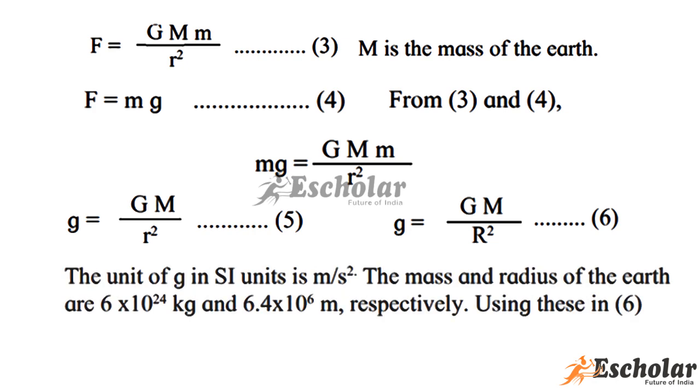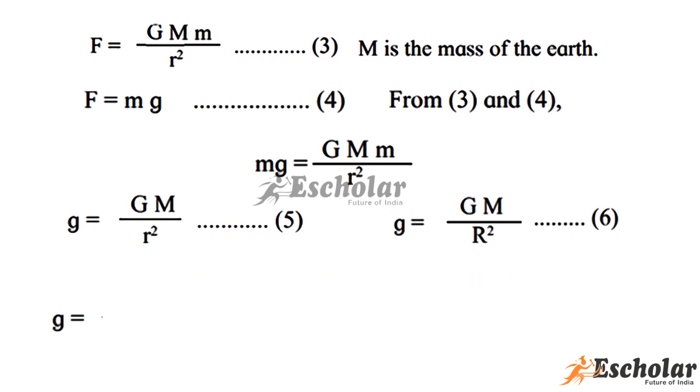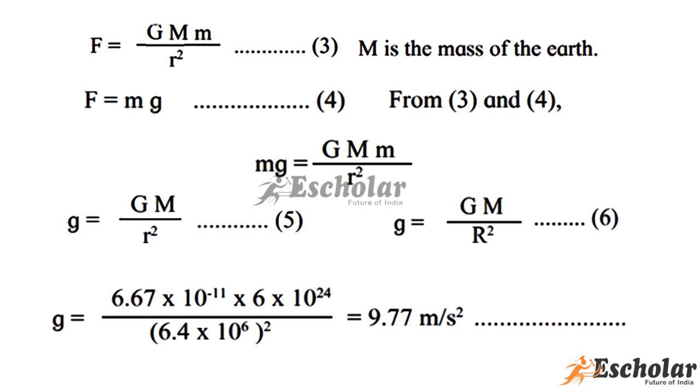The unit of g in SI unit is meter per second square. The mass and radius of earth are 6 times 10 raised to power 24 kg and 6.4 times 10 raised to power 6 meter respectively. Using this in equation 6, we get g equals 6.67 times 10 raised to power minus 11 times 6 times 10 raised to power 24 upon 6.4 times 10 raised to power 6 whole square. And the value of g is equal to 9.77 meter per second square, which is equation 7.